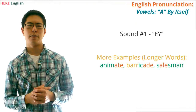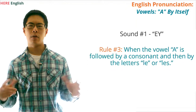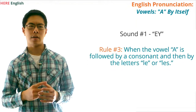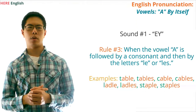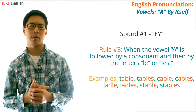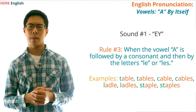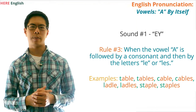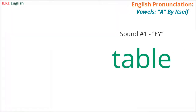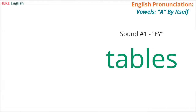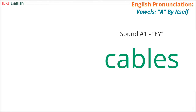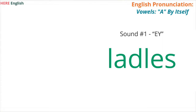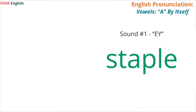Here's the third rule for when the vowel A will sound like A: when the vowel A is followed by a consonant and then by the letters LE or LES, it will have the sound A. Examples of words with this rule are table, tables, cable, cables, ladle, ladles, staple, and staples. Now, practice saying these words by repeating them after me: table, tables, cable, cables, ladle, ladles, staple, staples.